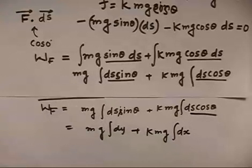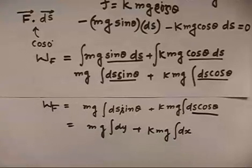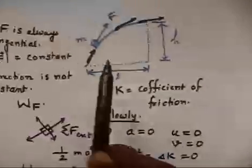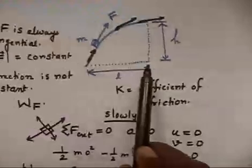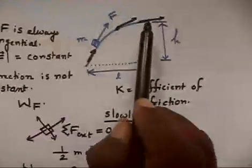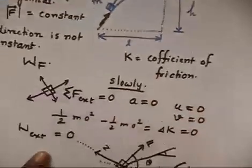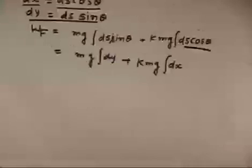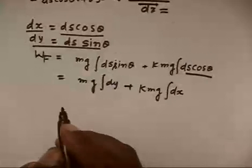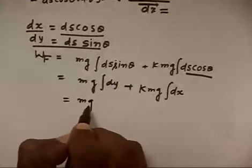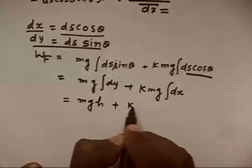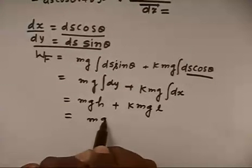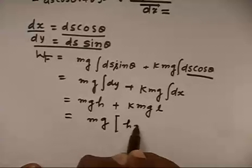Now you see, what is the integration of dx? What is the integration of dy? If you see the previous diagram, this is the summation of dx, that is L. Summation of dy is H. So if I replace this one, summation of dy is H. This is Mg H plus Kmg L. If I take Mg common, it will be H plus KL. So this is the work done by the external force.